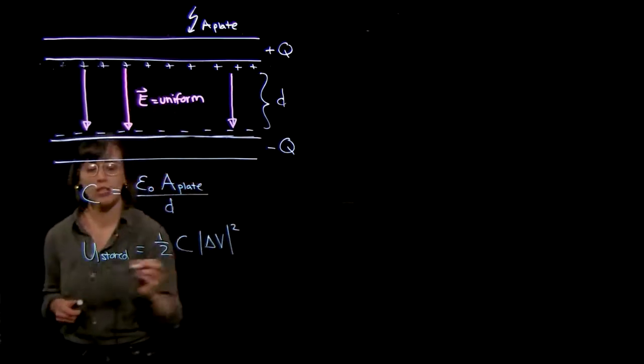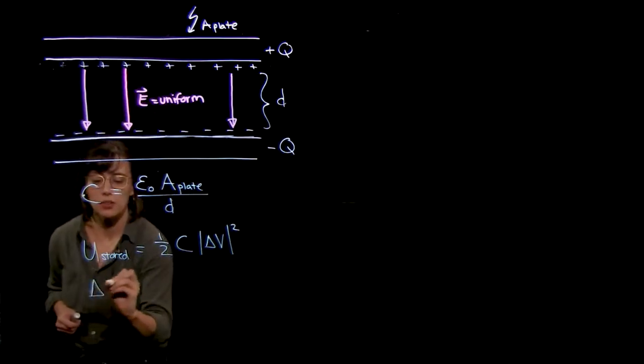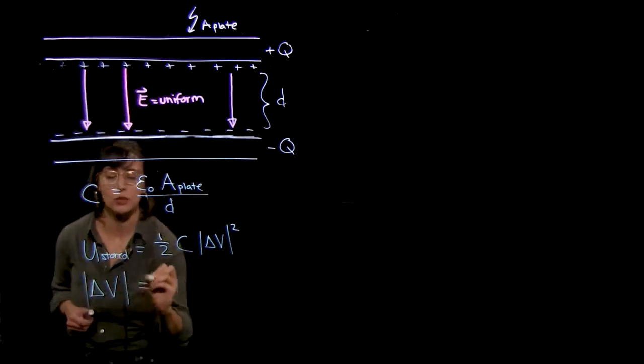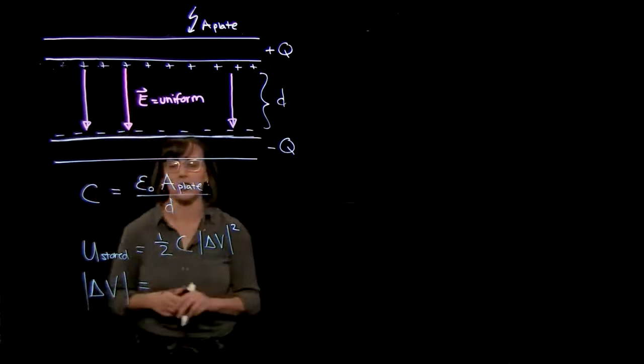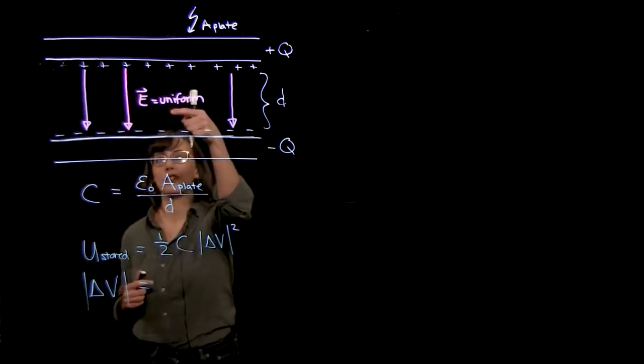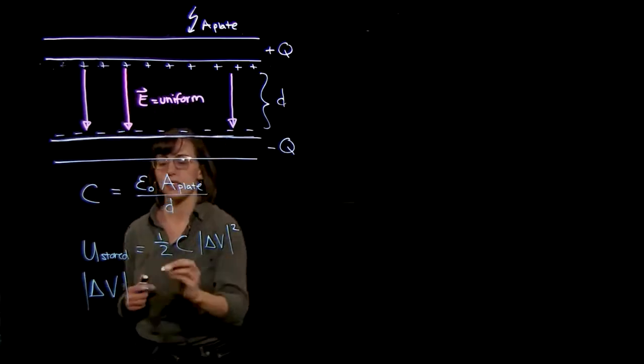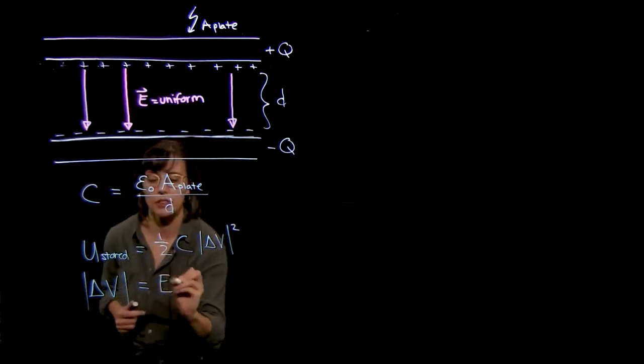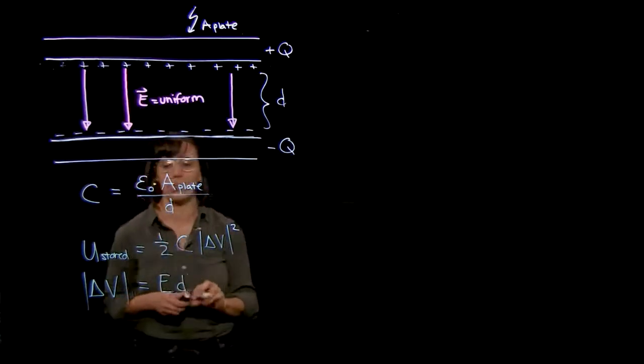Now we can think about what is this potential difference. This potential difference, and again here all we care about is the magnitude. The magnitude of this potential difference, because this electric field is uniform, is just equal to the electric field times the distance between the two plates.